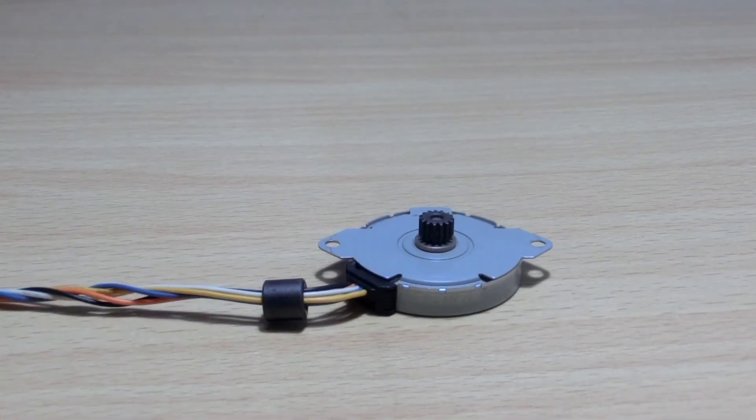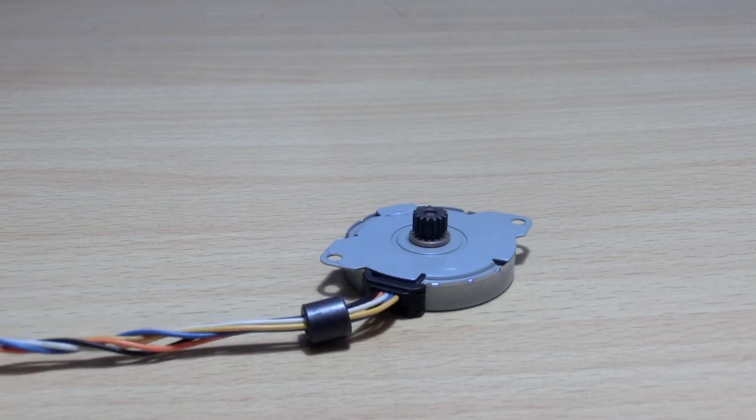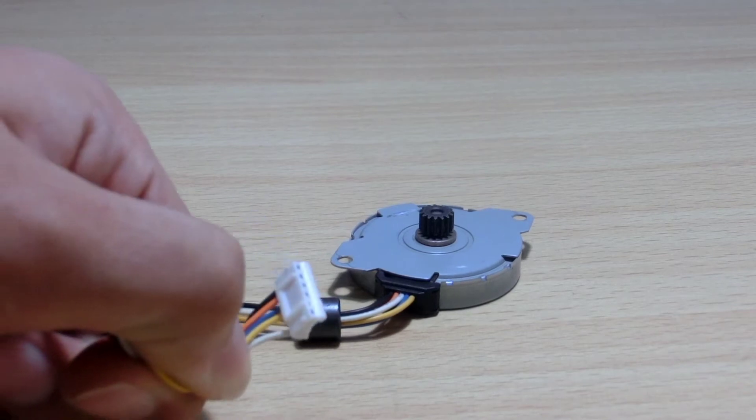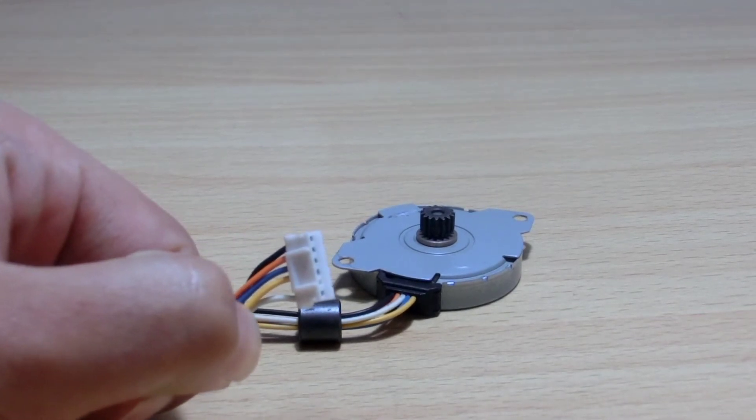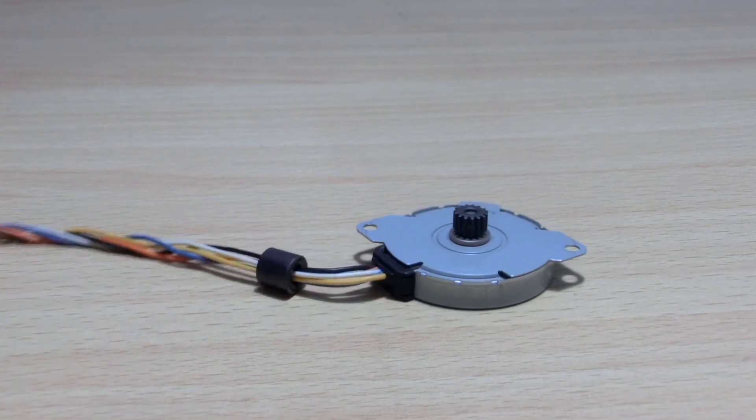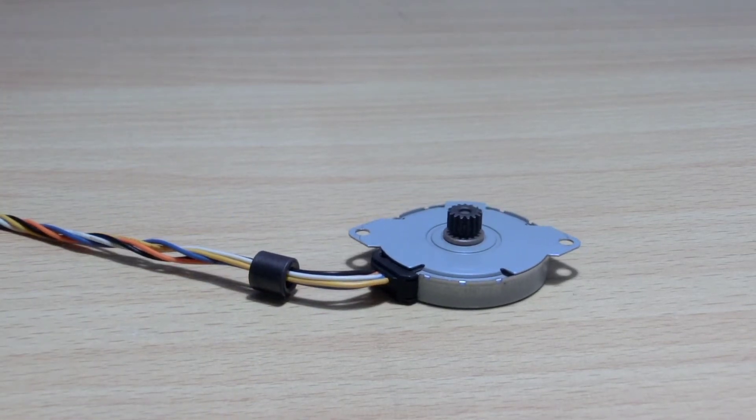This is a stepper motor, more specifically a unipolar stepper motor. Unipolar stepper motors most commonly have 5 to 6 wires coming out of them. This type of motor is used in precise motor applications where precision and cost efficiency is required such as printers, scanners, robots, etc.